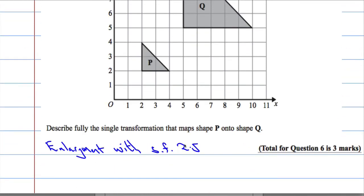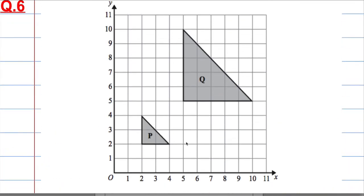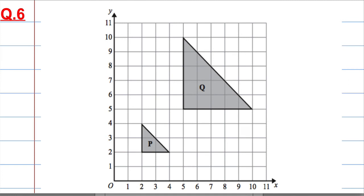That's two pieces of information, and the third piece of information is the centre of the enlargement. And the way to find that is to take out your ruler and draw a line from corresponding vertices.